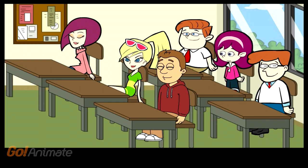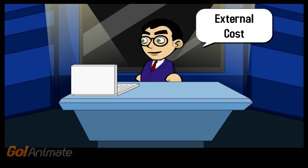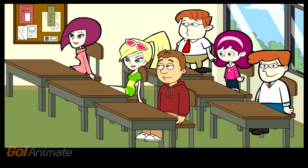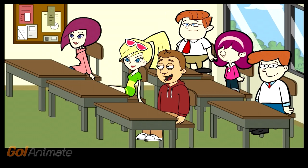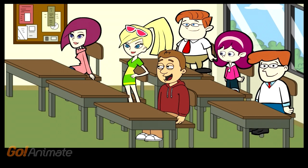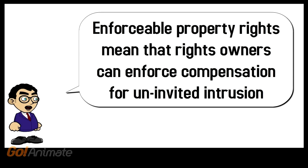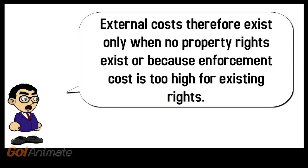Jennifer, air pollution is indeed an external cost to the polluters. But in what sense is air pollution external to the polluters? Dr. Fung: air pollution cost is external to the polluters because they do not have to pay for the cost imposed on others. Good. Brian, but why not? Because the recipients of air pollution have no rights to clean air. But why is the air not owned by anybody? Dr. Fung: is it because the enforcement cost is too high? Very good. Kim, to summarize: enforceable property rights mean that the rights owners can enforce compensation for uninvited intrusion. External costs therefore exist only when no property rights exist, or because enforcement cost is too high for existing rights.